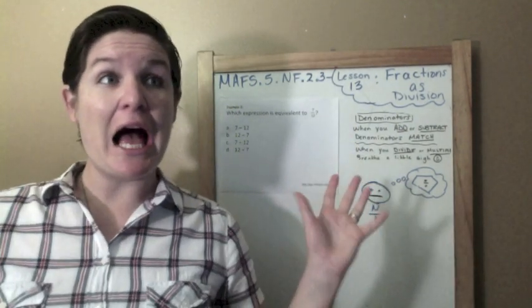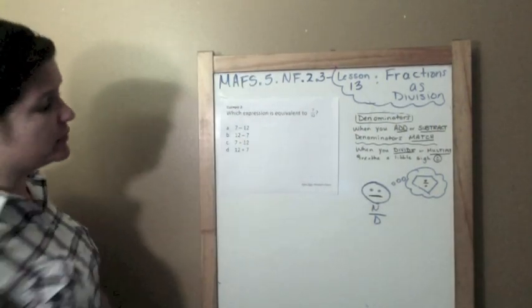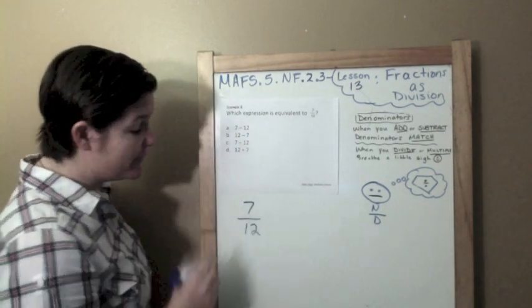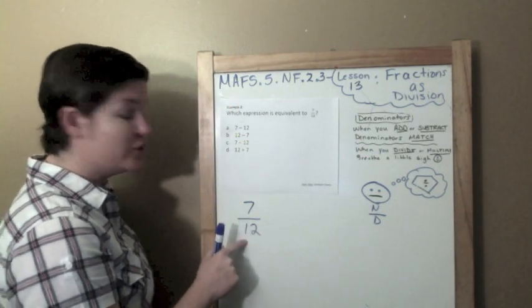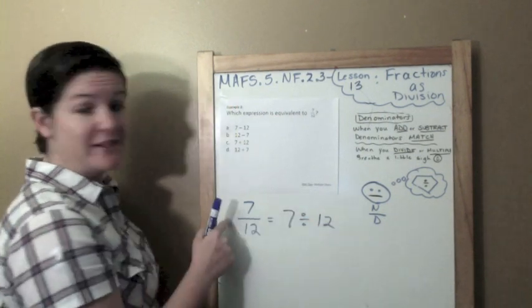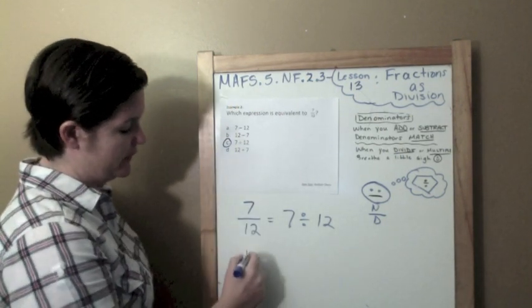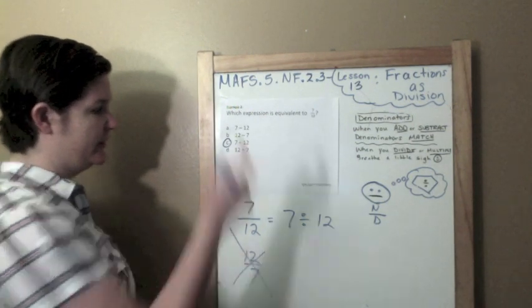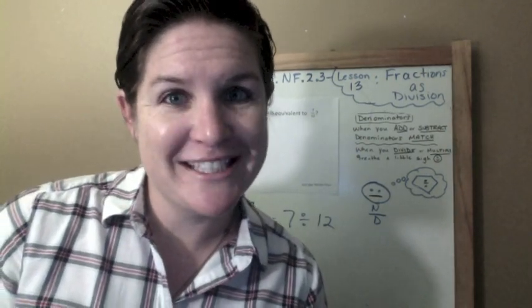Example two: Which expression is equivalent to seven-twelfths? I'm scared of fractions. Don't be. Remember, don't overcomplicate it. It's actually pretty simple. Seven-twelfths is the same thing as seven divided by twelve. Remember, that fraction bar means divided by. We just took 30 seconds to solve this problem. Now, it's not twelve divided by seven, because that would be twelve-sevenths, and that wasn't the fraction that I got. C, seven divided by twelve.